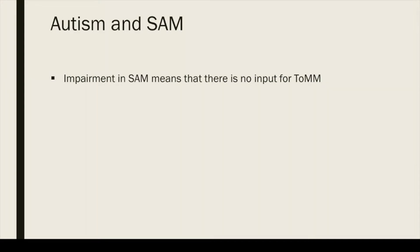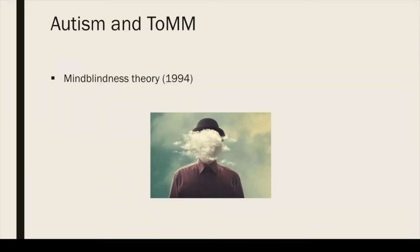Thus, according to Baron-Cohen, deficits in joint attention in autism are caused by an impairment in SAM, with the consequence that triadic representations cannot be built in any modality. This has the further consequence that there is no input for TOM to be triggered. Baron-Cohen proposes that autistic people are delayed in their development of SAM and TOM, and that this renders them, to some extent, mind-blind. Hence, the 1994 theory is sometimes referred to as the mind-blindness theory of autism.